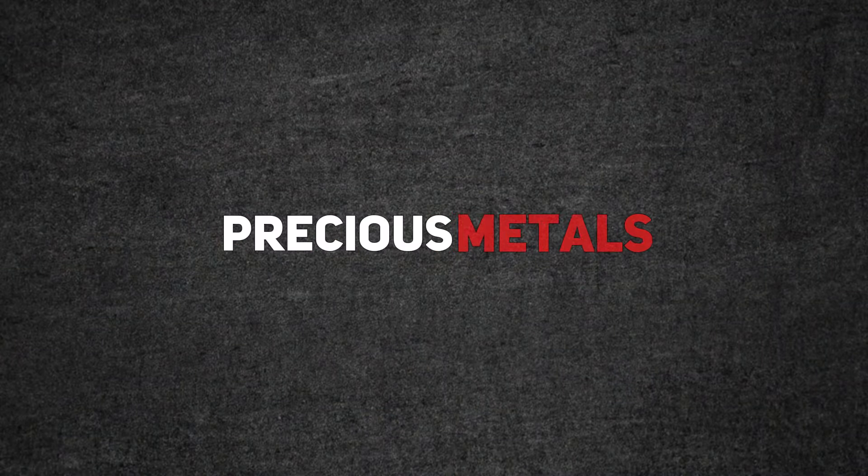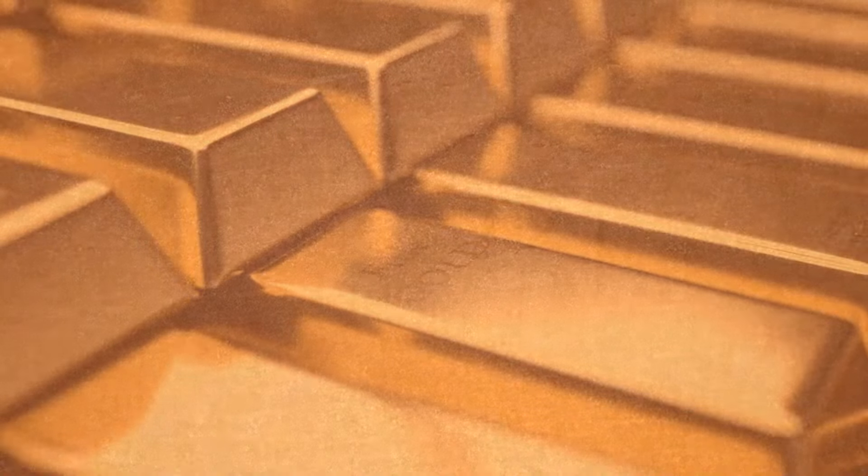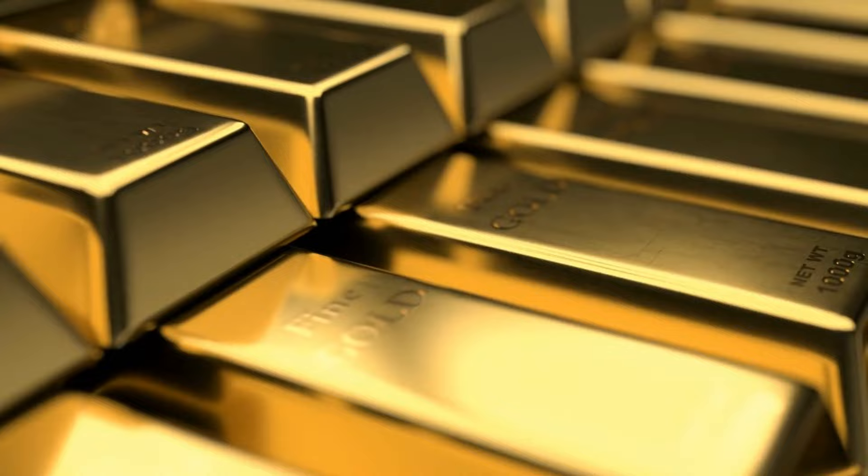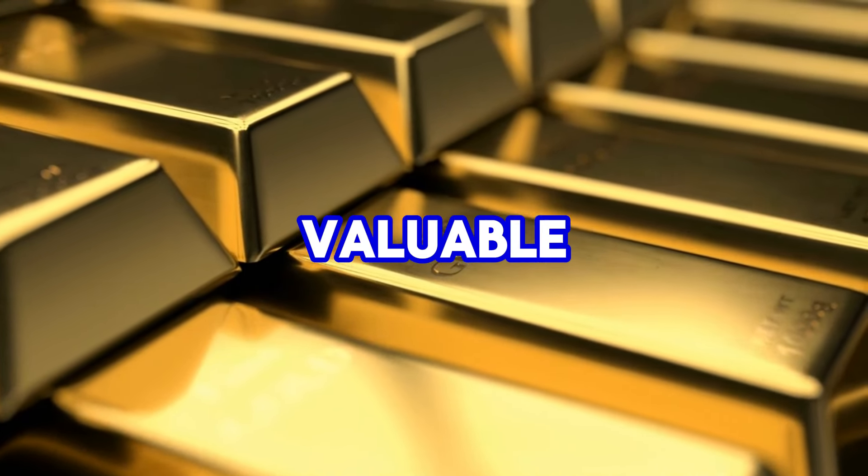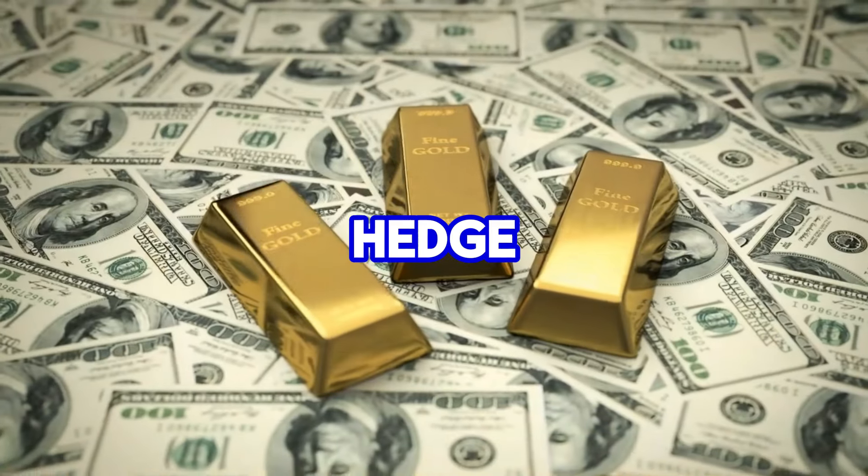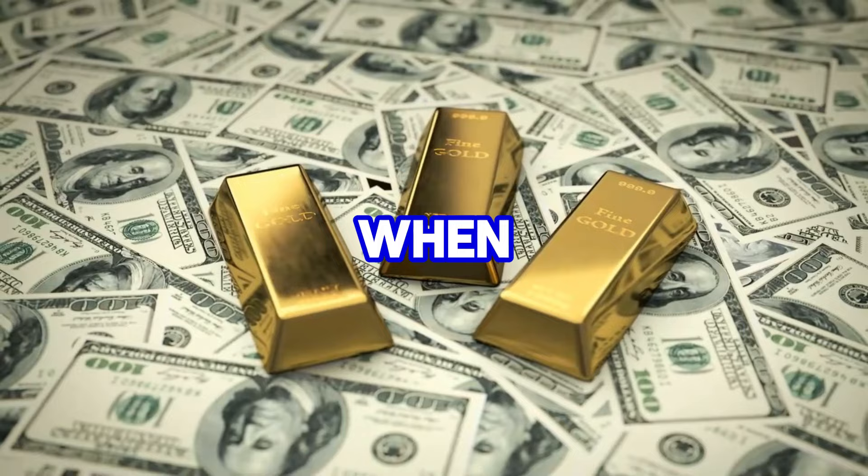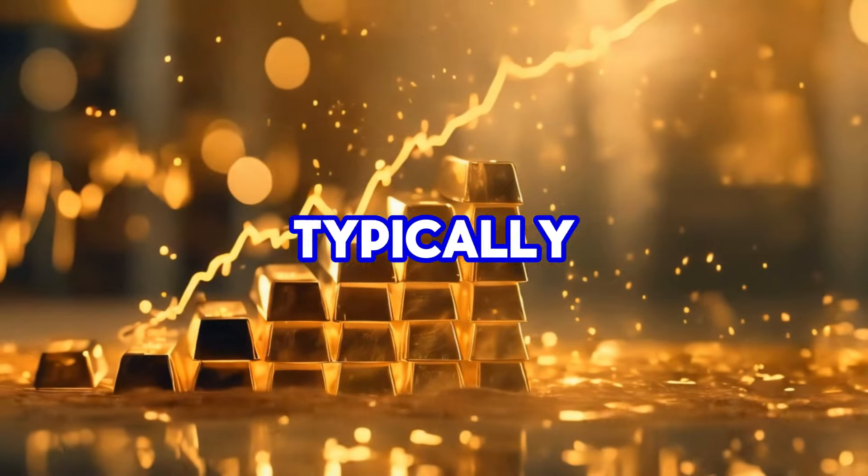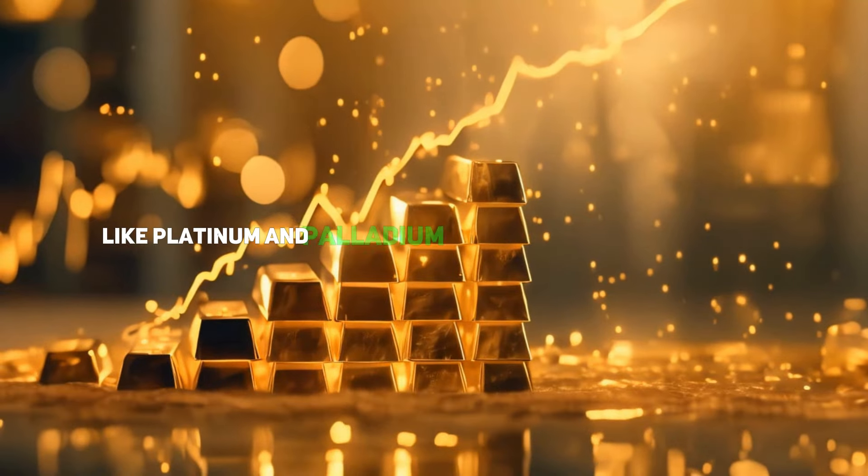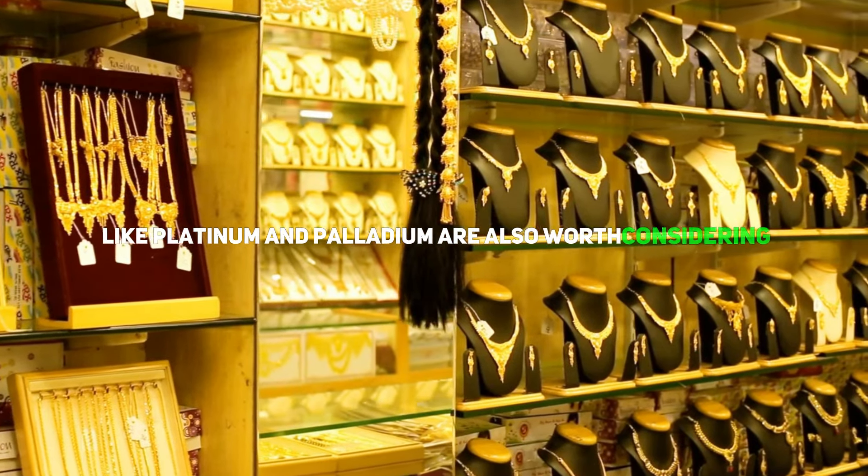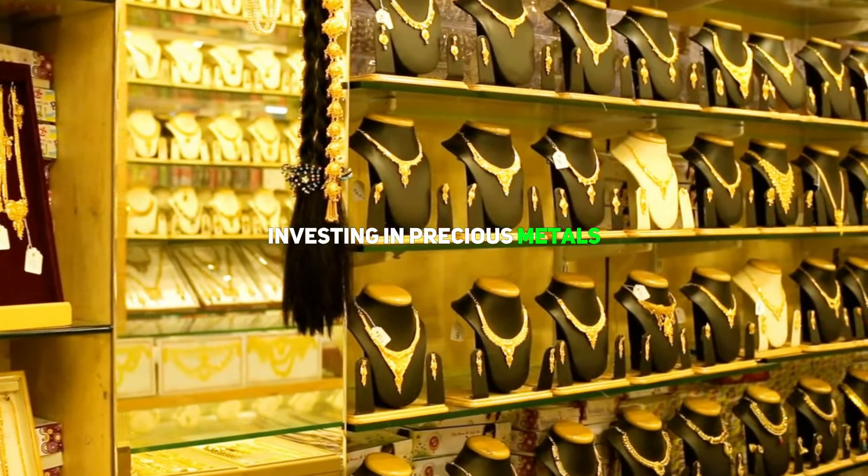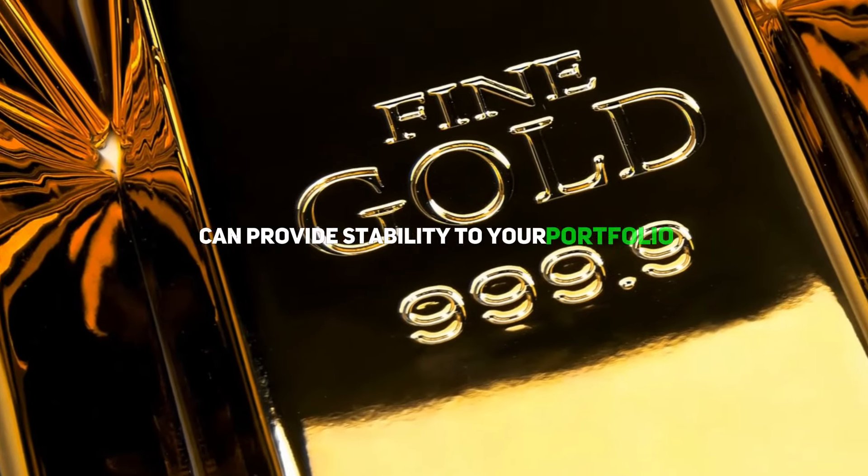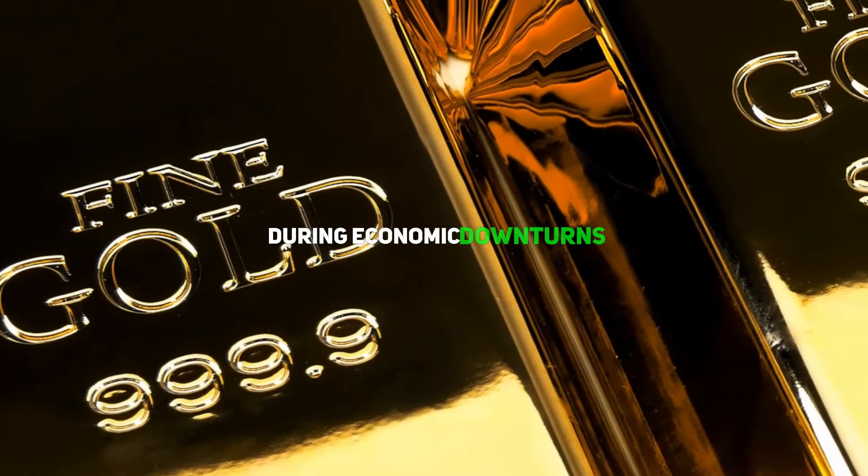Precious metals. Next, we have precious metals like gold and silver. These metals have been considered valuable for centuries and act as a hedge against inflation. When the value of paper currency goes down, the value of gold and silver typically goes up. Other metals like platinum and palladium are also worth considering. Investing in precious metals can provide stability to your portfolio during economic downturns.